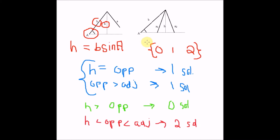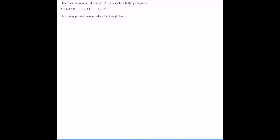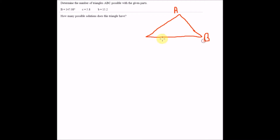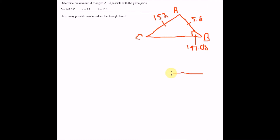Now let's go further into how to utilize this in example problems. In this first example, we are given angle B, side B, and side C. I'll draw this out — you should always draw out what you're given so you don't lose track. Angle B is 147.08 degrees, side C is 15.2, and side B is 5.8.